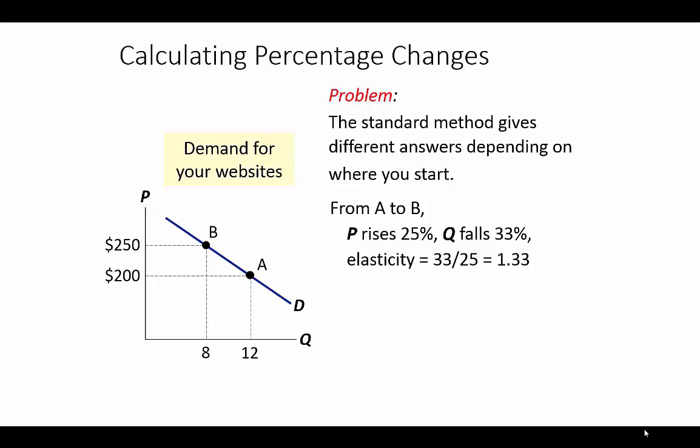However, if we start at B and go to A, the price is going down. We see the price change is 50 over 250, which is just 20% now. And the quantity change is plus 4 divided by 8, which is now 50%. So now our elasticity coefficient is much higher, 2.5. It's almost twice as large. So we're going to get a skewed result depending on where we start here. So we want a better method that kind of evens out that effect.